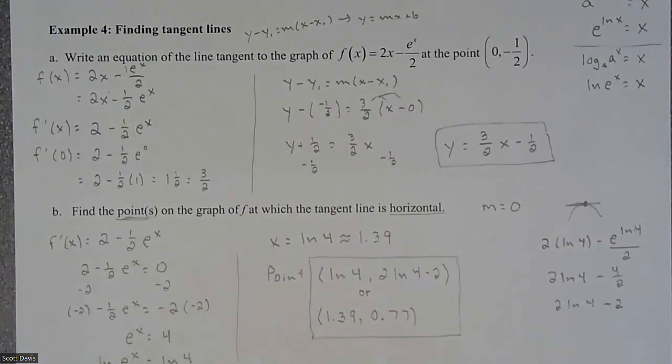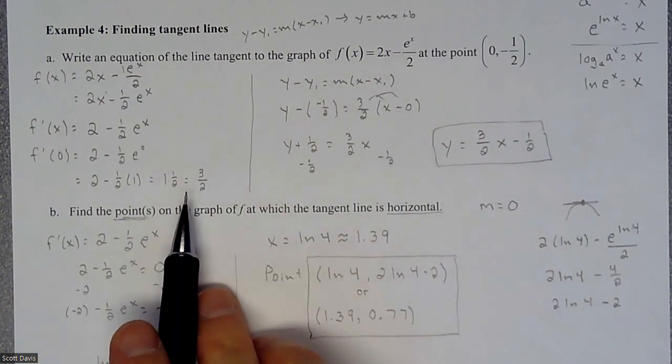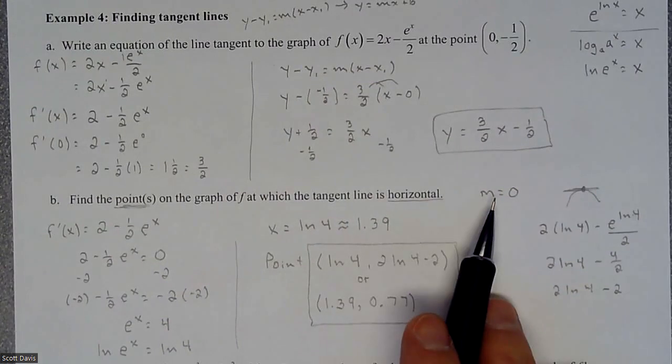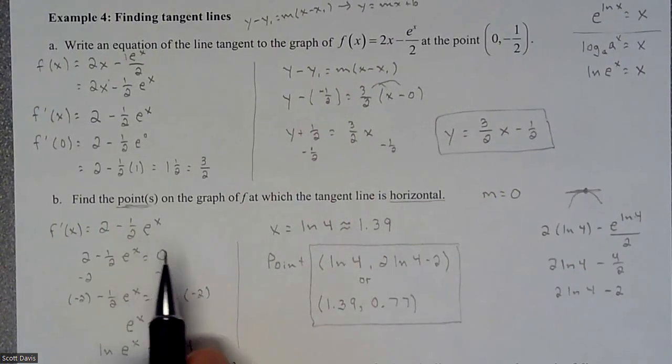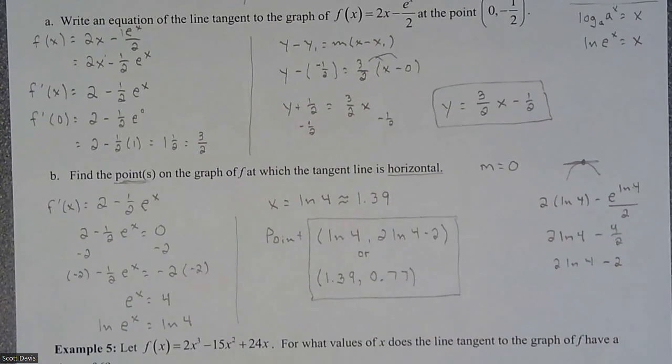So that was us finding a tangent line. It was we were taking the derivative, finding the slope, plugging it in, and then anytime they're talking about a horizontal slope, that means we're taking our slope equation and setting it equal to a 0 always because slope of a horizontal is always 0.